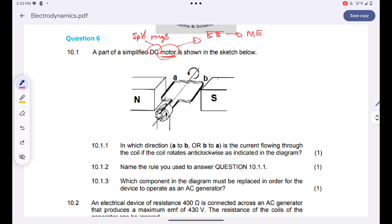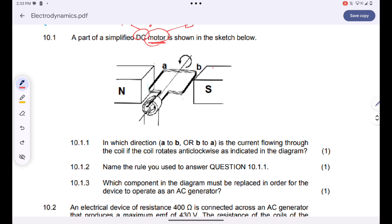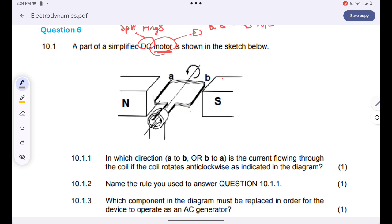The first question asks, in which direction, A to B or B to A, is the current flowing through the coil if the coil rotates anticlockwise as indicated in the diagram below. Firstly, we are told that the coil is rotating anticlockwise. They want us to determine the direction of current. We are going to use our left-hand rule. Since the coil is rotating anticlockwise, if I can take this side as my reference, that means my thumb will be pointing downwards.